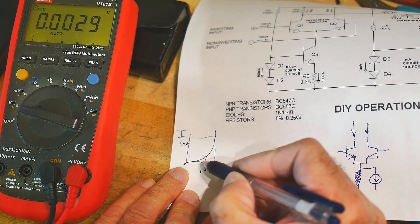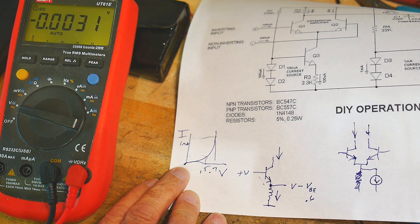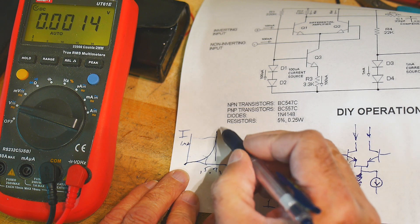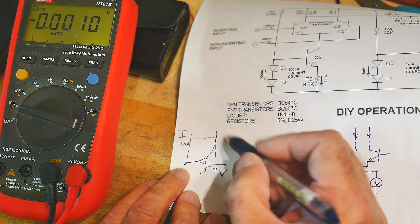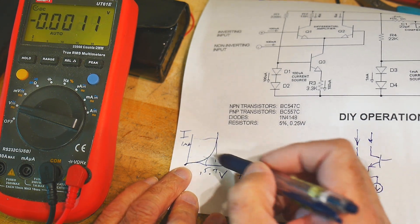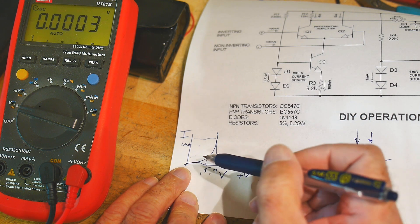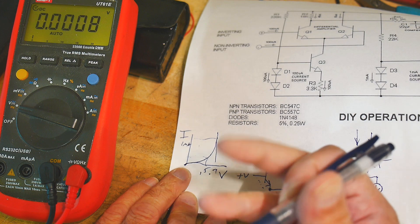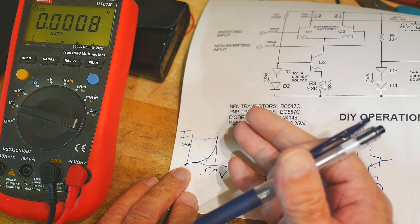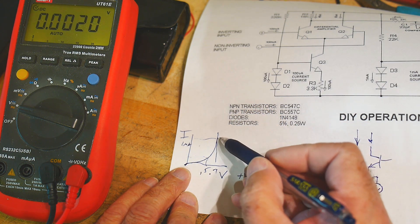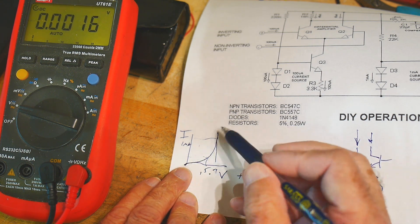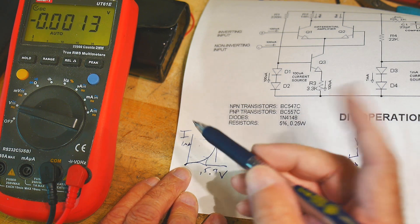All diodes have a slightly different curve to them. Schottky diodes are different than silicon diodes, different than germanium diodes. And even within a series — like the 1N4000 series — depending on the voltage rating of that diode, it may have a different characteristic of forward voltage and breakdown voltage. So it is important that you choose the right diode for the right job.